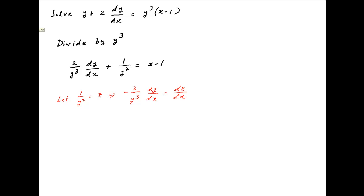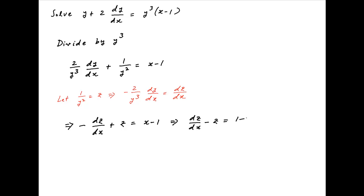Using this substitution, the given equation can be written as minus dz upon dx plus z is equal to x minus 1. Multiplying both sides by minus 1, this becomes dz upon dx minus z is equal to 1 minus x.